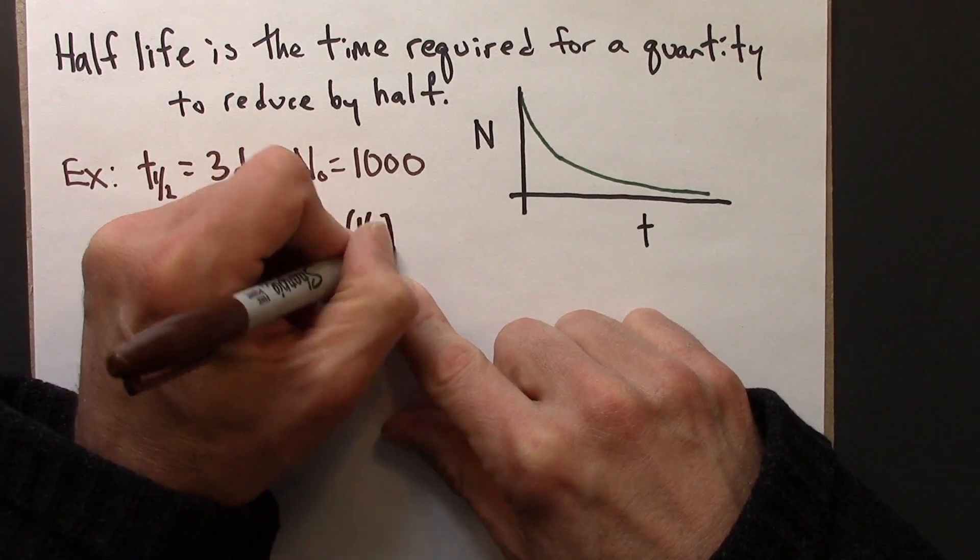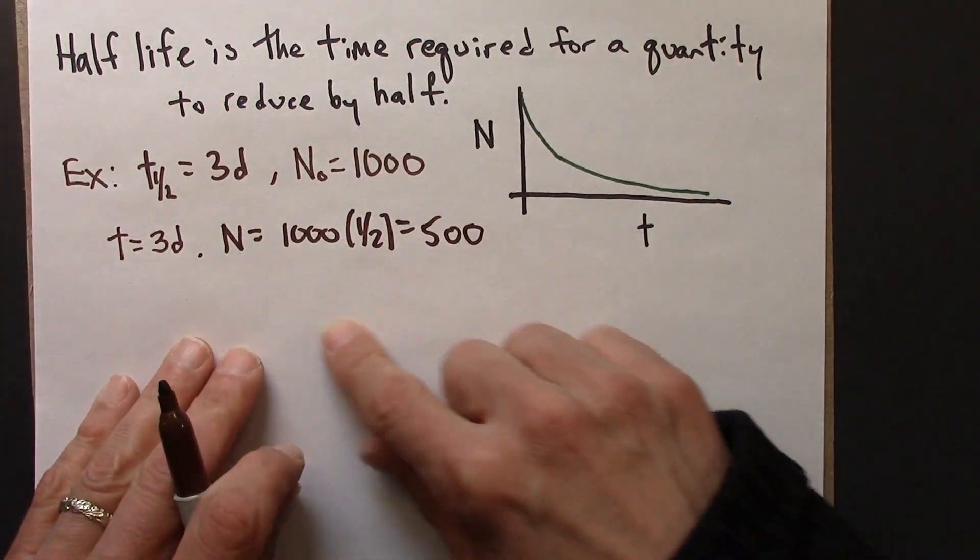We would take a thousand, multiply it by a half, and we would get 500.